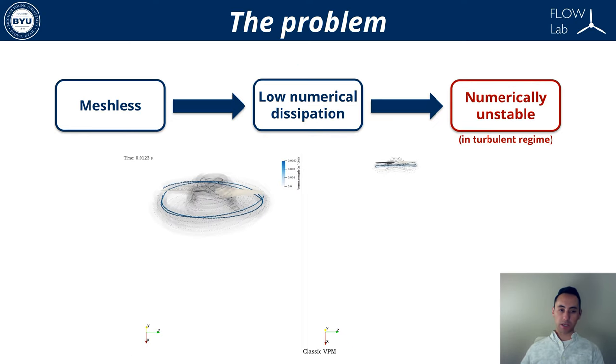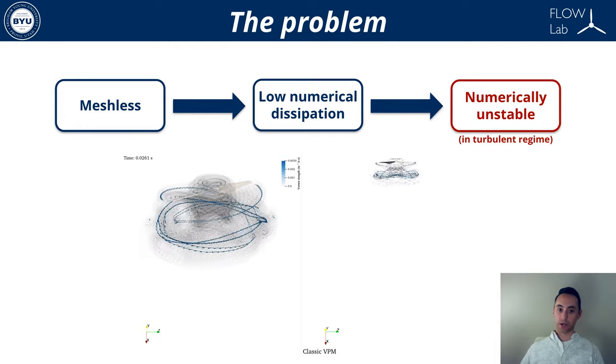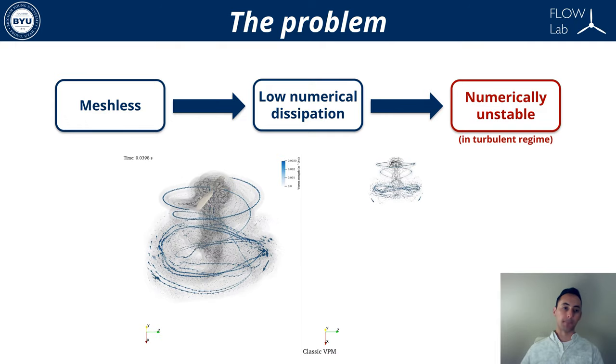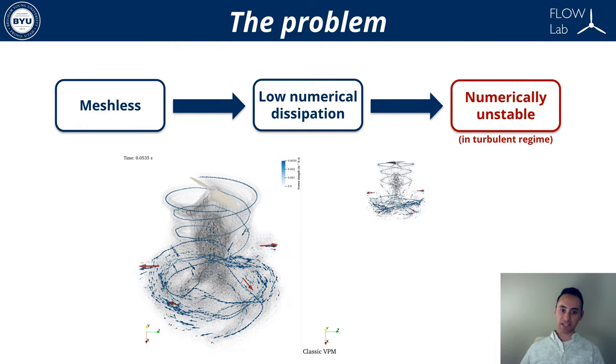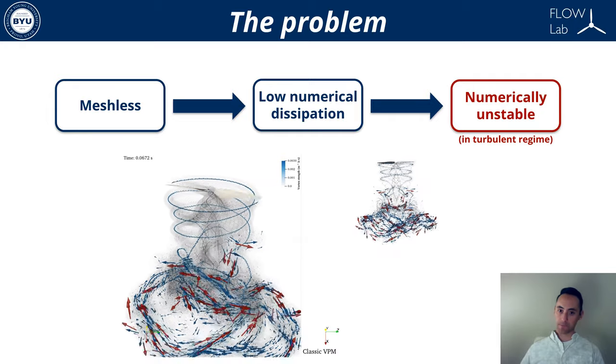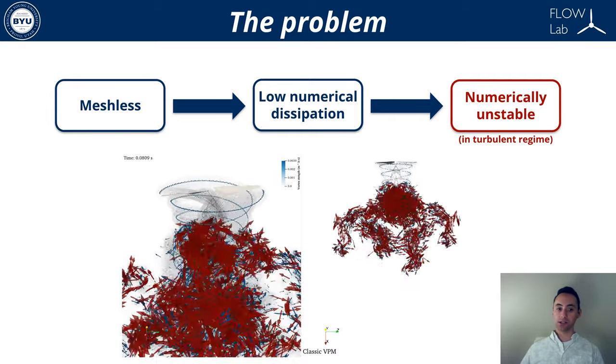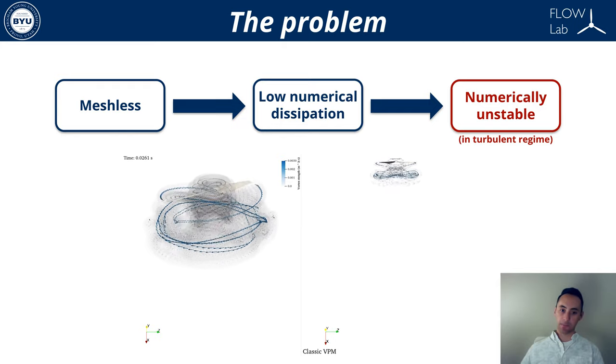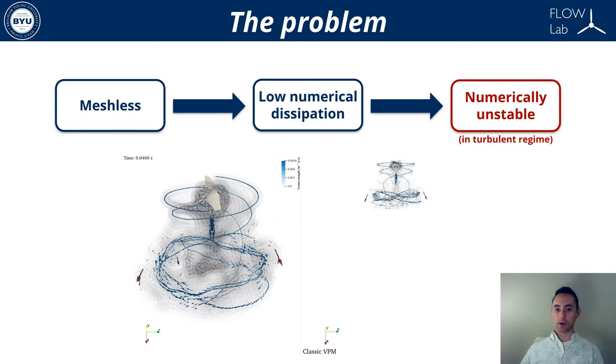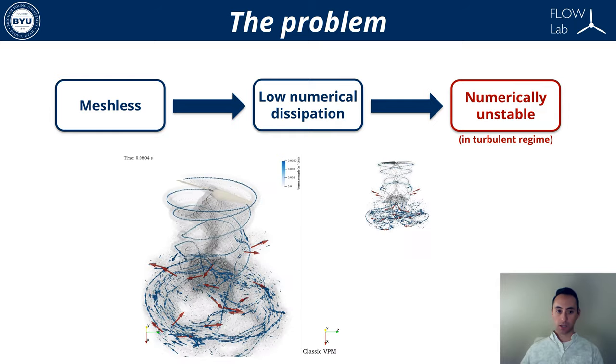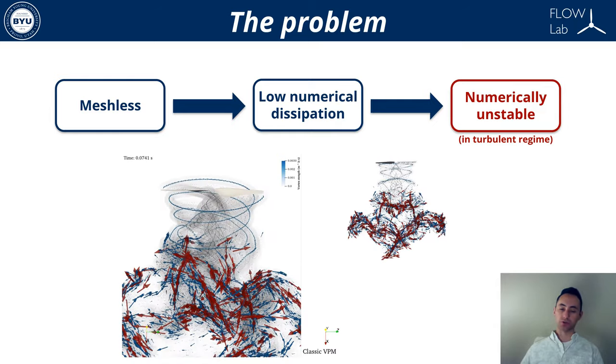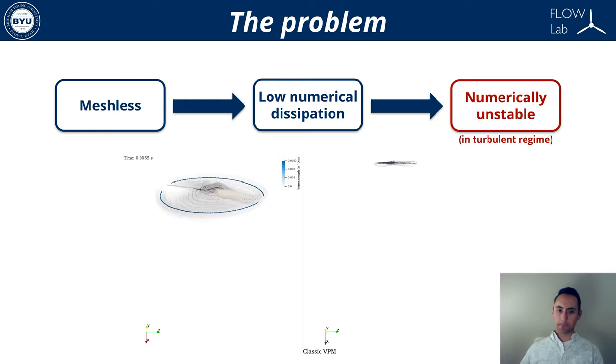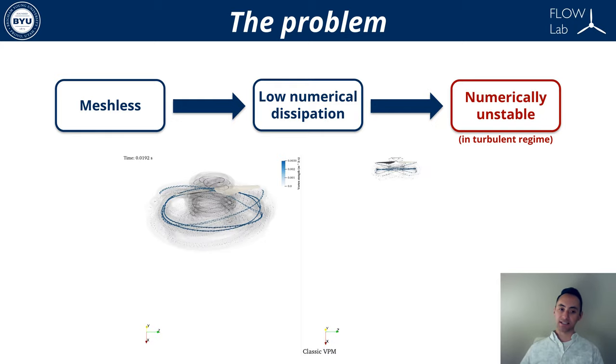The feature of being meshless is both the strength and weakness of the VPM. Without a mesh the method has very low numerical dissipation which means that some numerical instabilities that are typically damped in mesh-based CFD quickly dominate the simulations when the wake breaks down close to the turbulent regime, making the VPM numerically unstable.